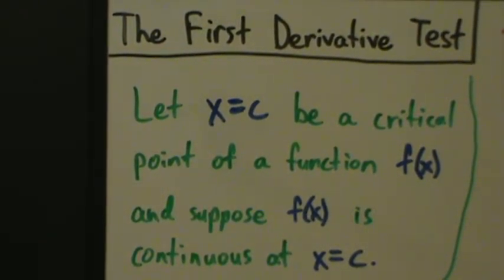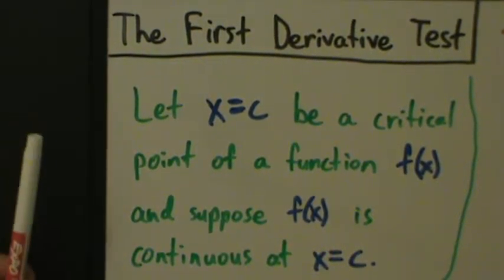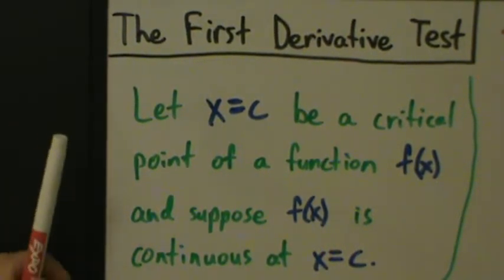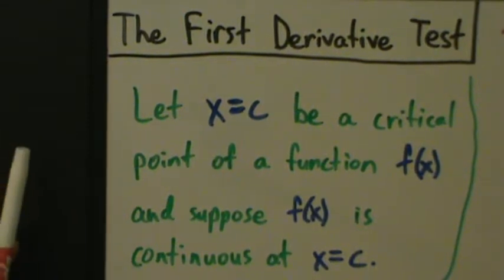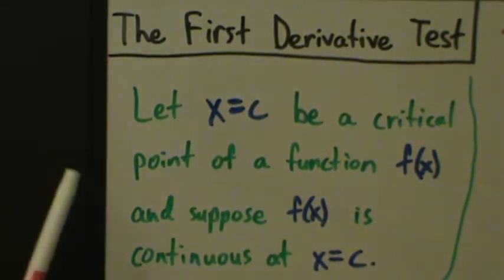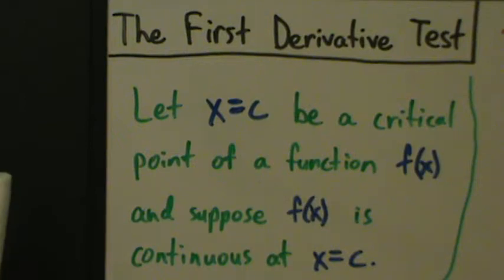In the last video, we talked about increasing and decreasing functions and how that concept of increasing and decreasing relates to the first derivative. We said that if a function is increasing, that means that the first derivative f prime of x is positive. And if a function f of x is decreasing, that corresponds to a negative derivative.